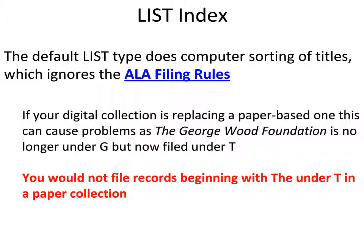Particularly if you were taking a physical records collection — vertical files or something — and changing it into a digital one where things are filed by ALA filing rules, all of a sudden things are not going to be in the same place. In the computer, things will be under A or under T. So anything beginning with A, or the George Wood Foundation, will not be filed where you would normally find them in a physical filing sequence. This can be a problem.